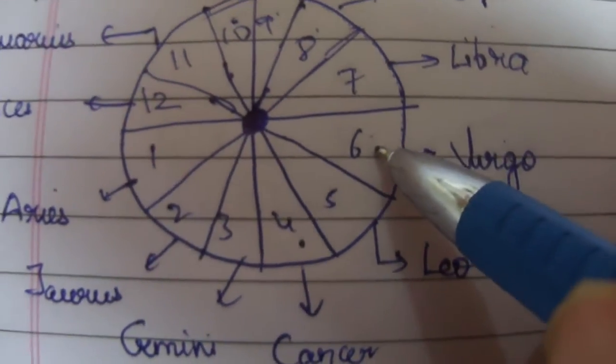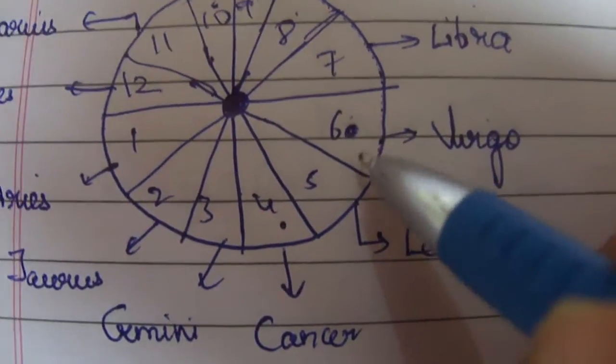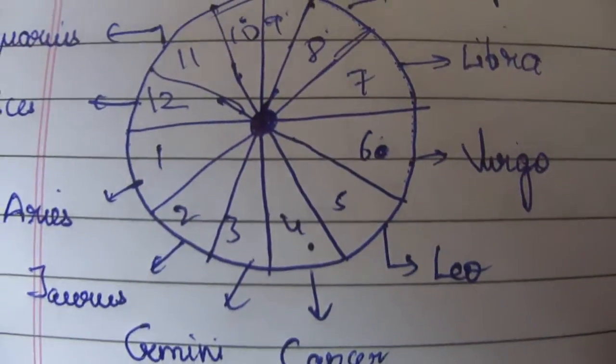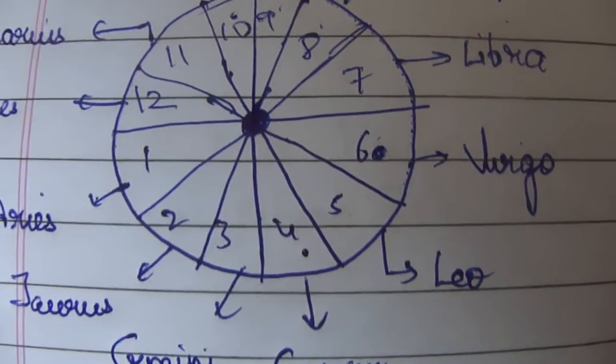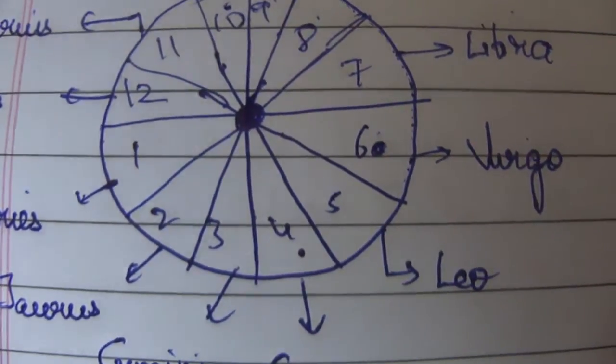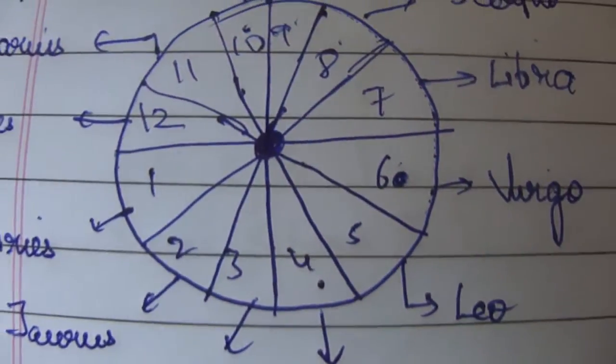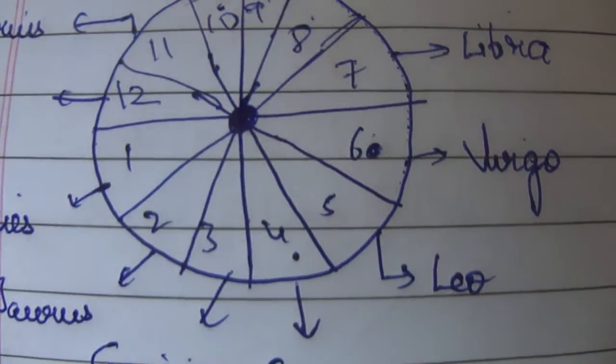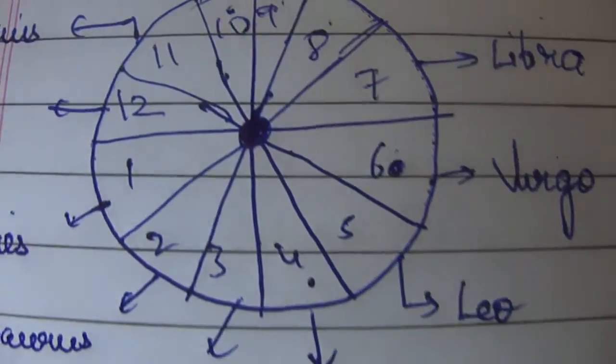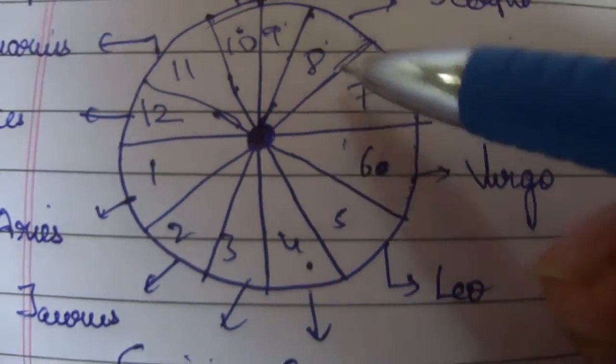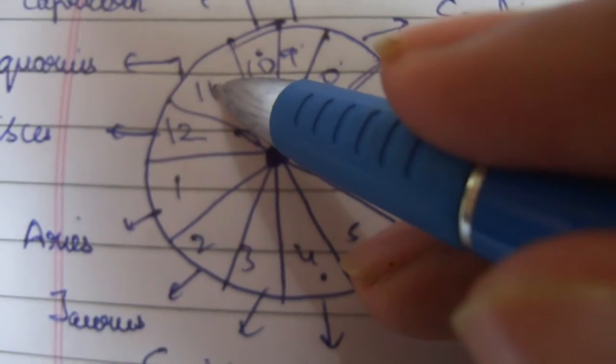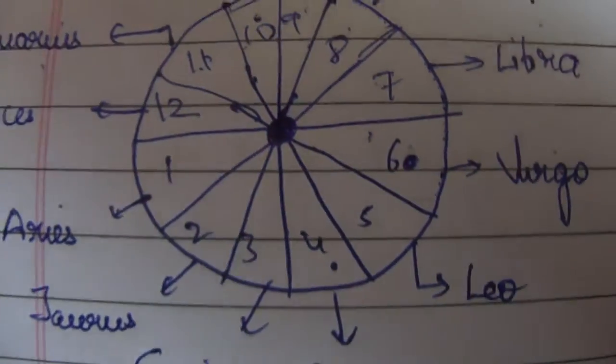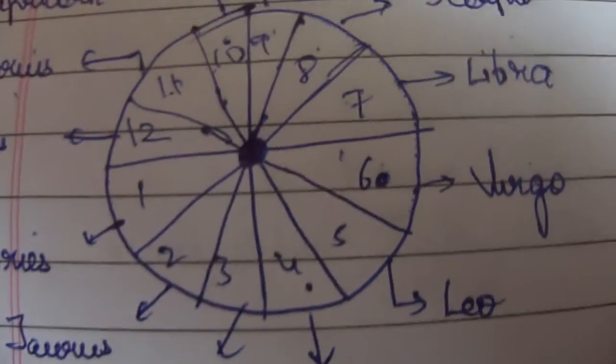So your moon sign, suppose it is Virgo. Suppose at the time of birth, the moon was present in the sign of Virgo, and we are talking about moving Jupiter or Gochar Jupiter. In the seventh house, for example, or we are saying Gochar Jupiter in the sixth, for example. It means one, two, three, four, five, six - that means it is here, that means Jupiter is in Aquarius. That's how we will always consider with respect to the moon sign.